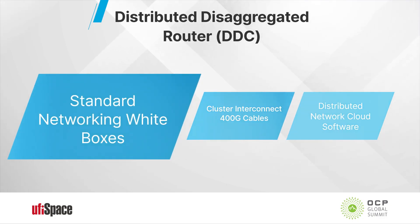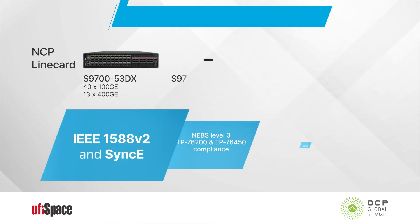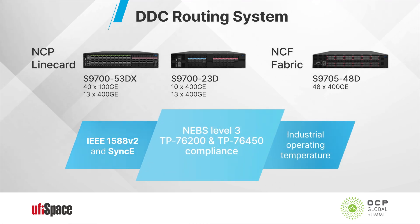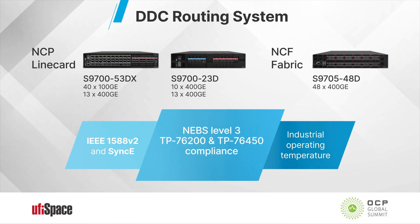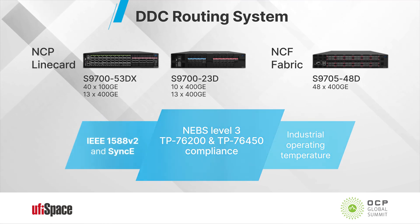Let's drill down to the different components of the DVC, looking at both the fabric and the line card. The fabric is made up with the Broadcom fabric element architecture based on the Ramon chipset. The line card is based on the Broadcom Jericho 2 chipset. This is built based on the AT&T DVC specification, and it passed NEBS 3 compliance along with the TP76200 compliance specified by AT&T.